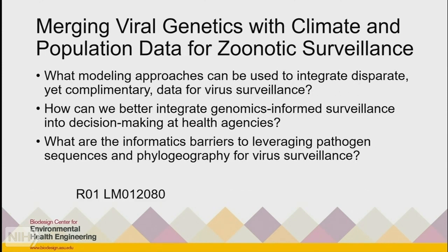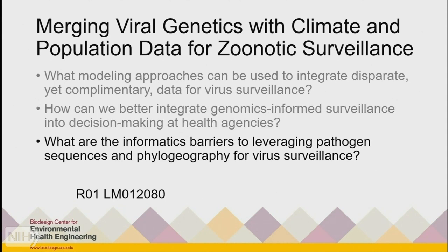That inspiration led us to the first project, called Merging Viral Genetics with Climate and Population Data for Zoonotic Surveillance. A major goal was figuring out how we can leverage this technology to better integrate this science within traditional epidemiology. Some questions we looked at: what modeling approaches can be used to integrate disparate yet complementary data for virus surveillance? How can we better integrate genomics-informed surveillance into decision-making at health agencies? And what are the informatics barriers to this process? I'd like to acknowledge Dr. Sim, who is the program officer for both this work and the other project.